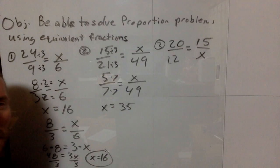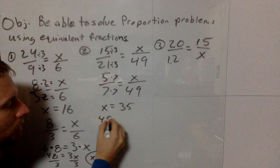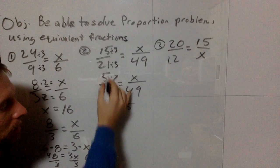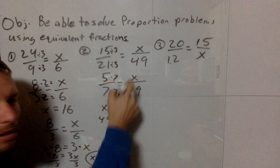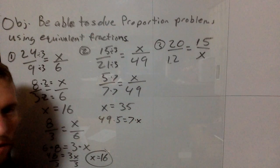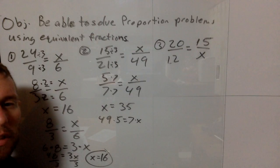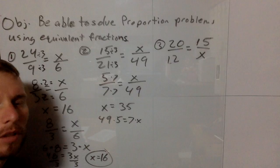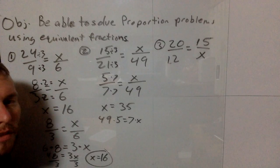If you couldn't see that relationship, you could use cross products: 49 times 5 equals 7 times x. When you multiply and divide by 7, you still get 35.